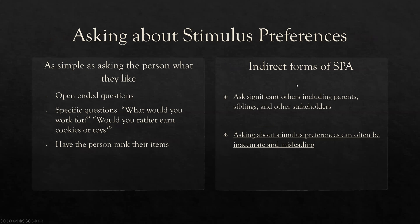Let's start with asking about stimulus preferences — probably the most indirect and inaccurate type. It can be misleading and inaccurate, but it's quick and efficient, and it's a good way to start. If we already have an idea of what the client might like by asking, it can narrow down choices for further preference assessments. Use open-ended, non-leading questions — very casual conversation. Specific questions like 'What would you work for?' or 'Would you rather earn cookies or toys?' can be useful. Remember, stimulus preferences don't necessarily establish something as a reinforcer, but we're using them as a jumping board into identifying reinforcers.